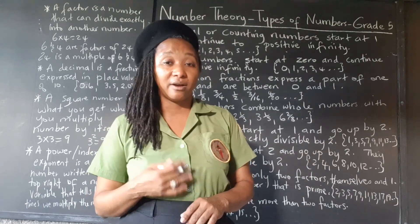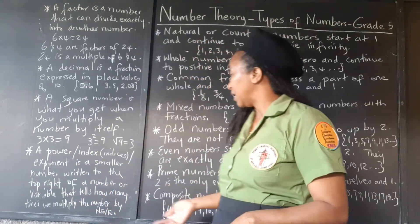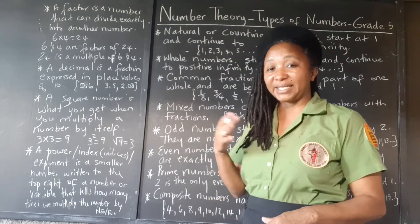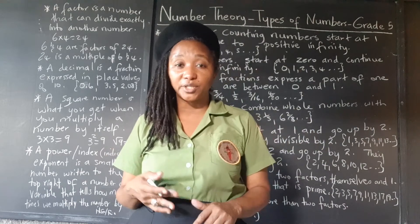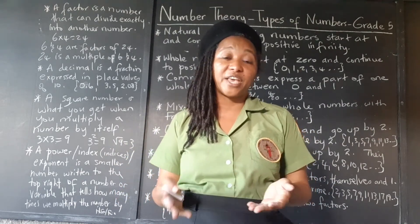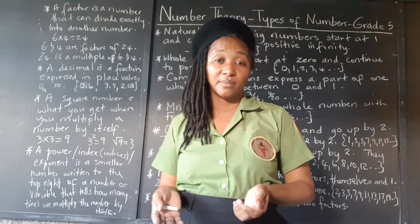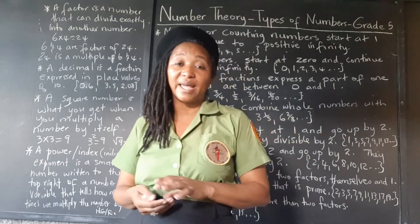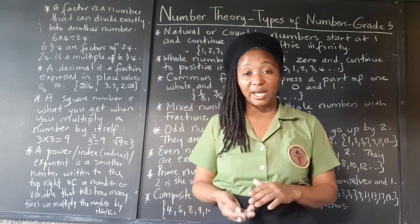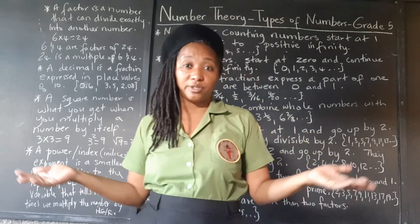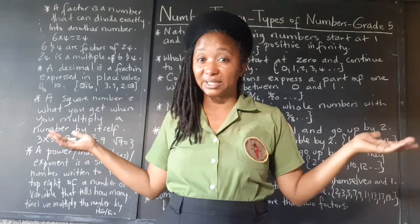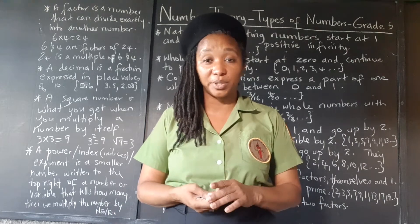Now the even numbers are the opposite. They also go up by two, starting at two. The first even number is two — two, four, six, and so on. Even numbers are exactly divisible by two, meaning if you divide them by two you will not get a remainder. Two, four, six, eight, ten, twelve, fourteen — all those are even numbers.